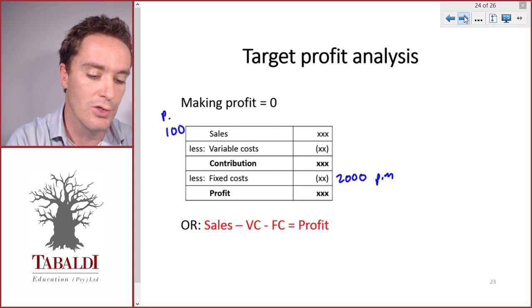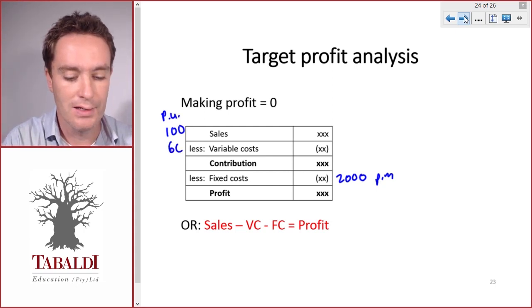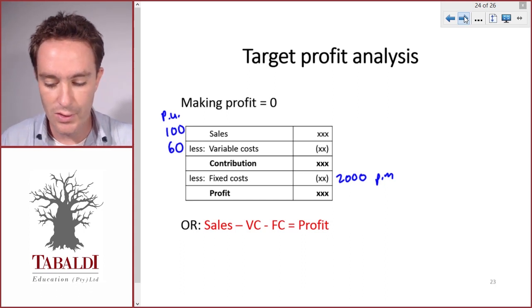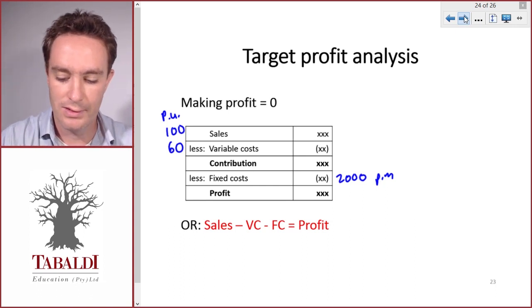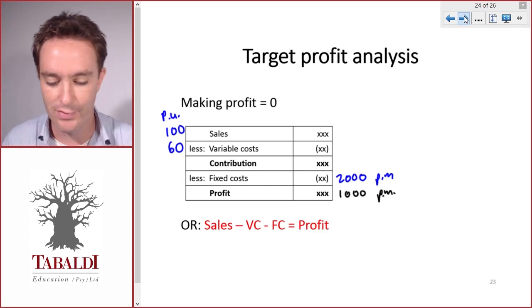And our variable costs per bike equals $60. So then let's assume we said we want to make a target profit of $1,000 per month - that's what we want to take out of this business.